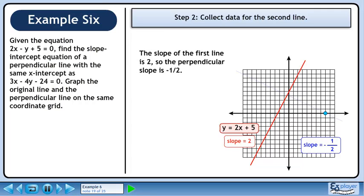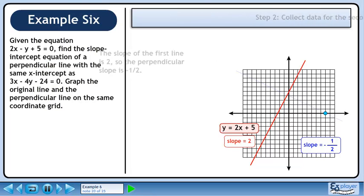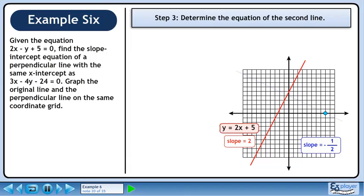The slope of the first line is 2, so the perpendicular slope is negative 1 over 2. In step 3, we'll determine the equation of the second line.